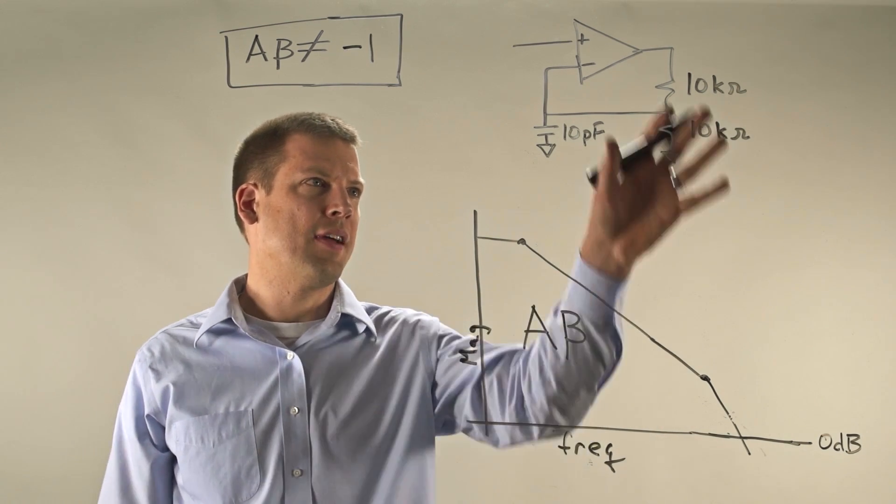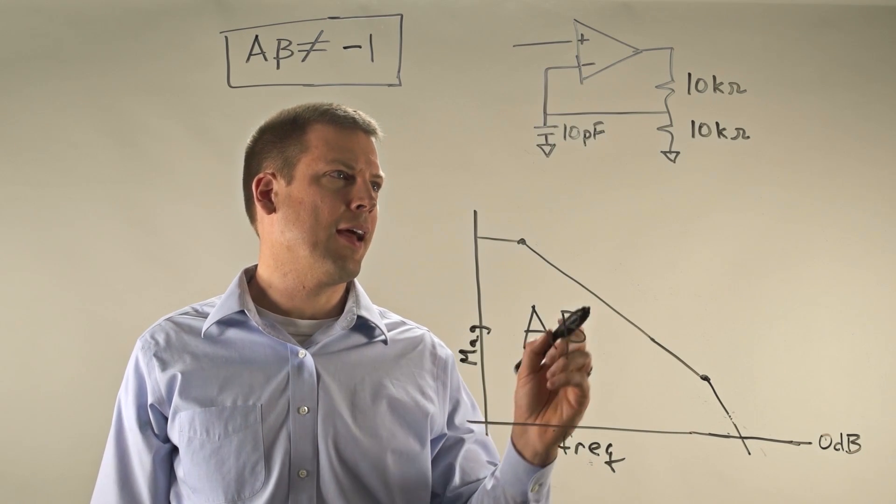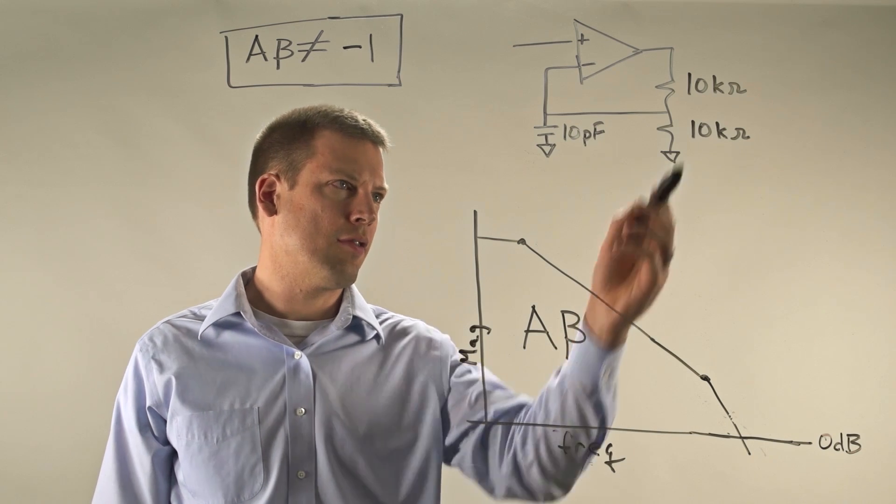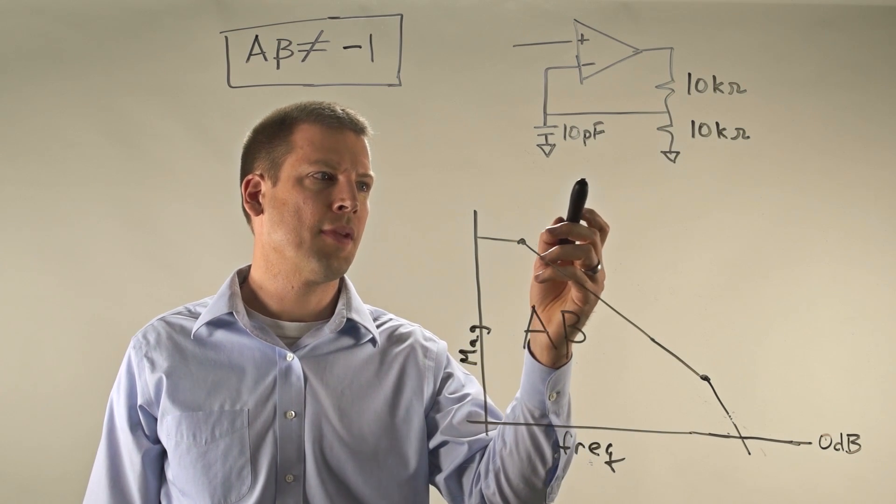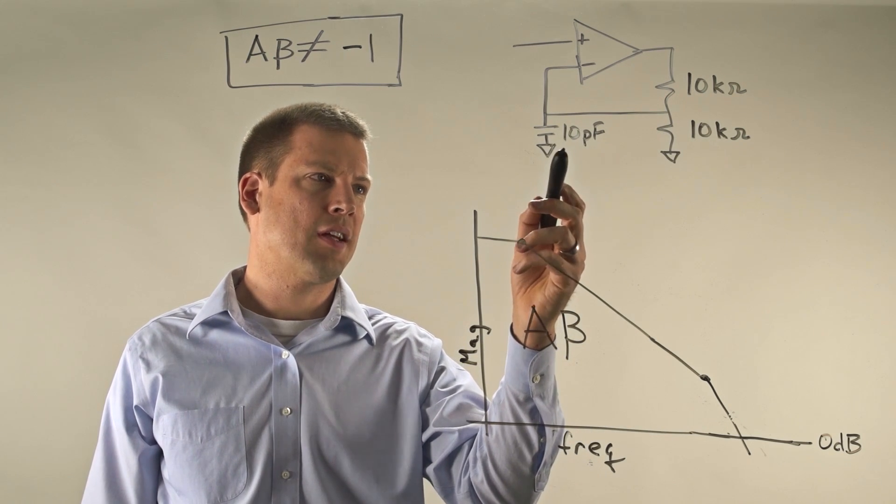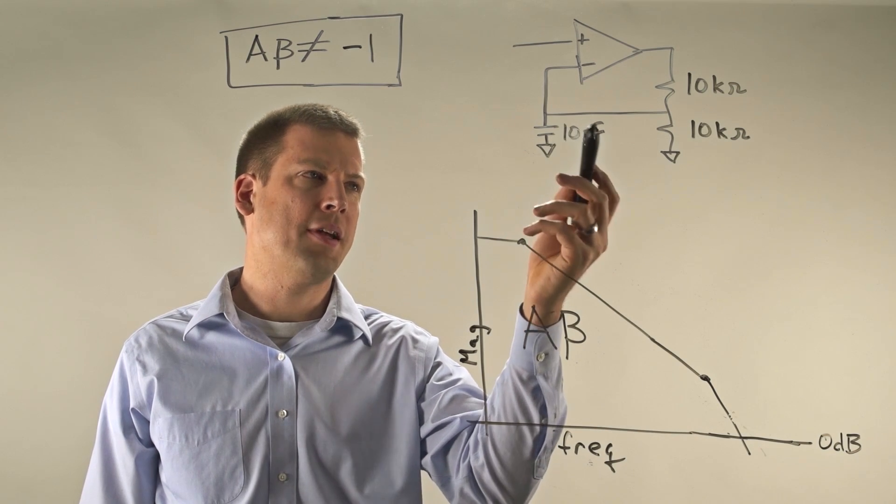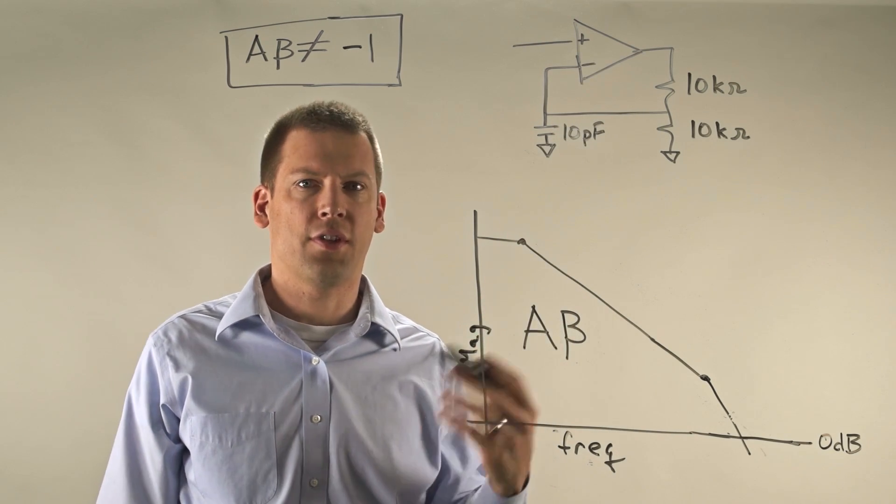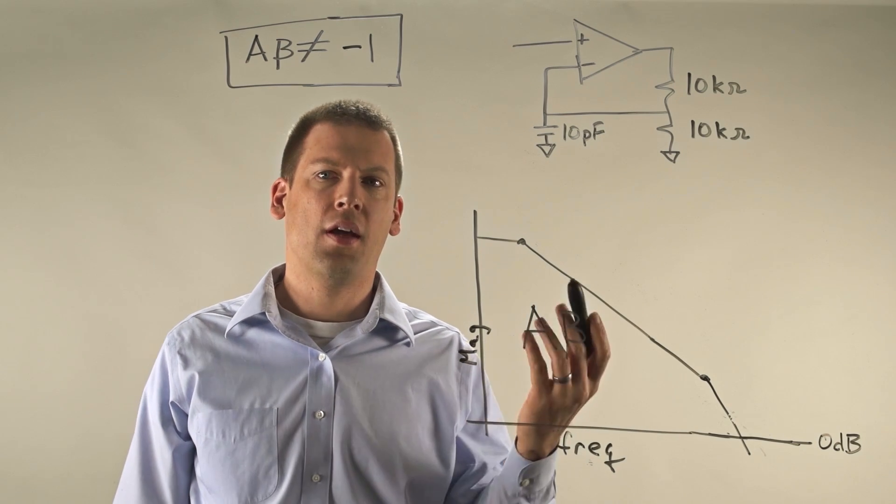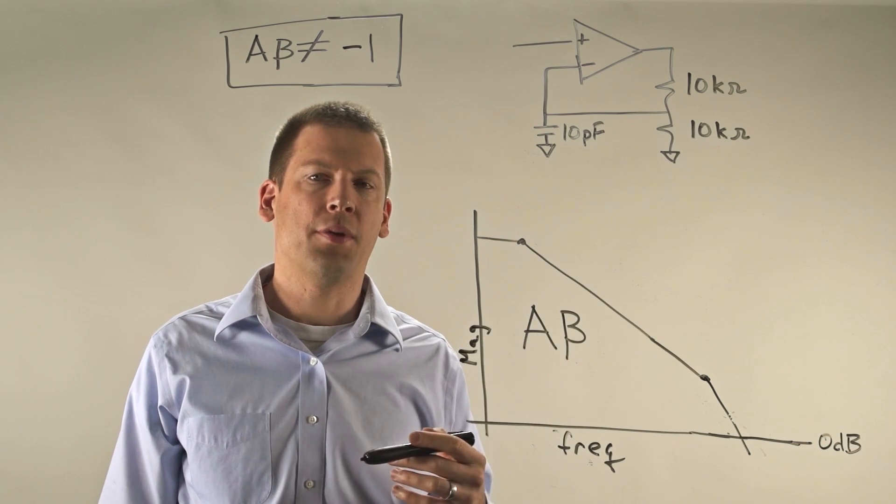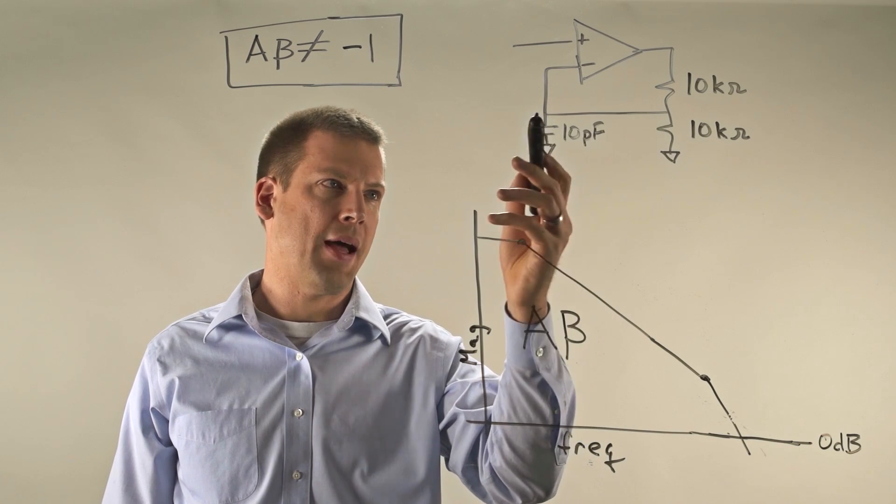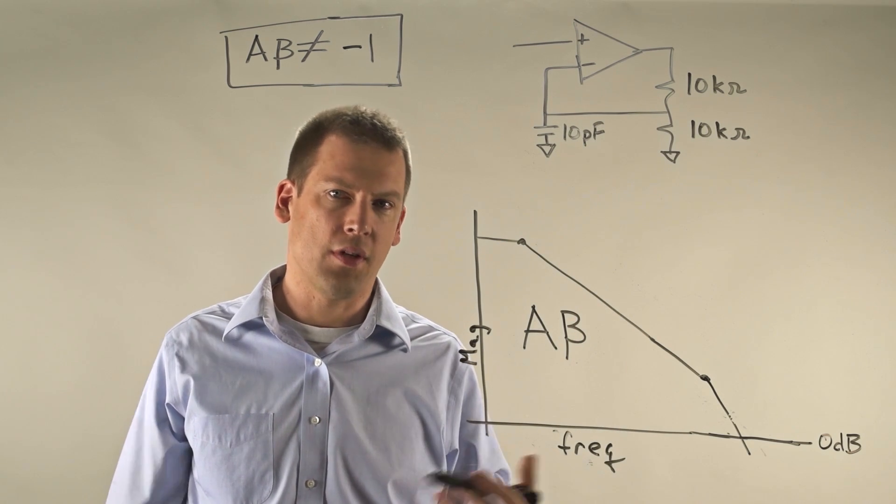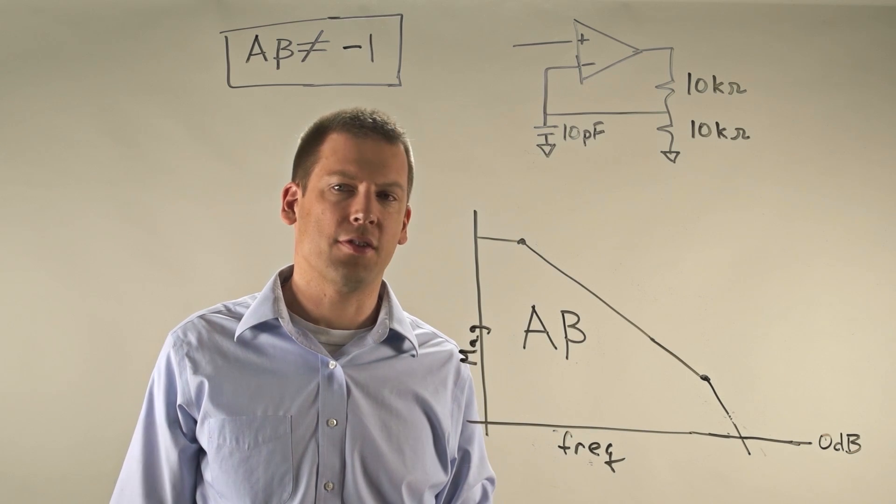I've drawn an example circuit up here and it's just a gain of two non-inverting configuration. I've used two 10 kilohm resistors and I'm modeling some parasitic capacitance as 10 picofarads. So this would be a combination of both capacitance of the op amp itself, so let's say you're using a JFET or some op amp that had a little bit higher input capacitance and also whatever capacitance that you have of your trace. If you had a longer, fatter trace, you'd have more parasitic capacitance.